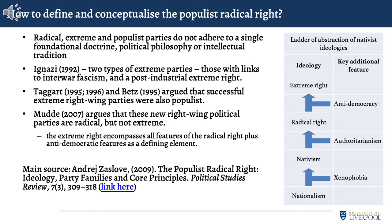Zaslove argues that unlike traditional political parties such as communists, socialists, or Christian democrats, radical and populist parties don't adhere to a single foundational doctrine or intellectual tradition. That's partly because of how they emerged: Norway's Progress Party began as an anti-tax party; the Northern League in Italy as a regional movement; the MSI in Italy has fascist roots; and the Austrian Freedom Party and Swiss People's Party were established parties transformed by charismatic leaders. Parties can reach the populist radical right by various means.